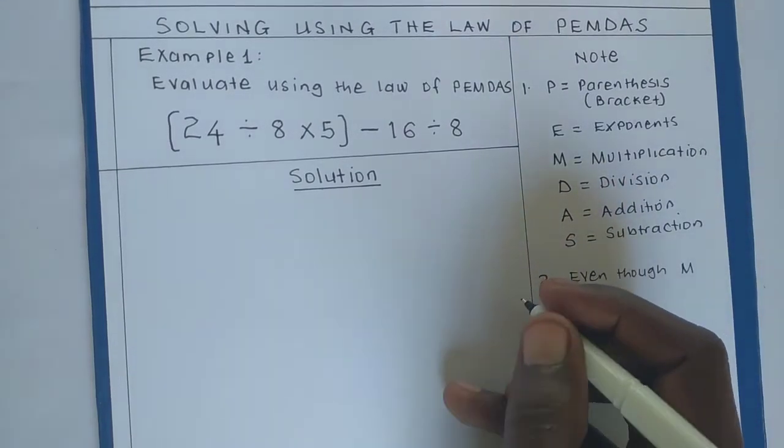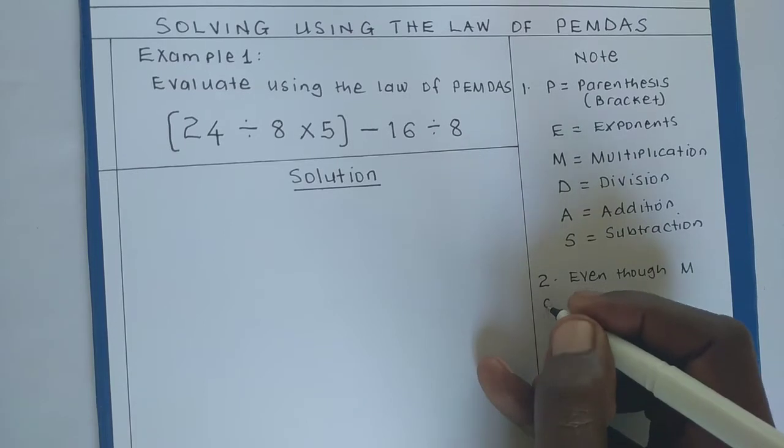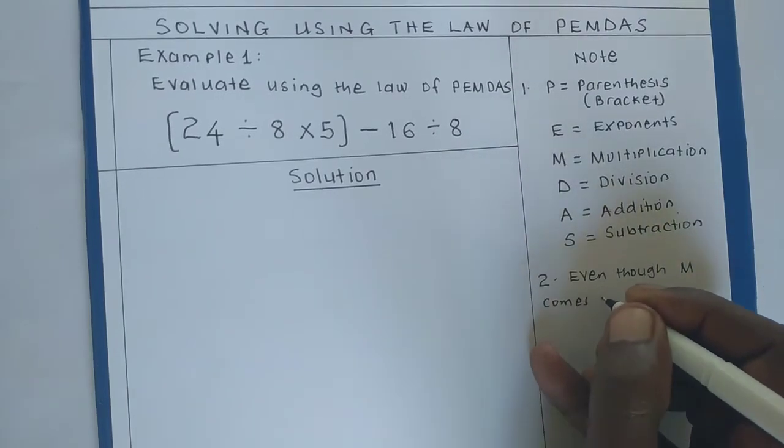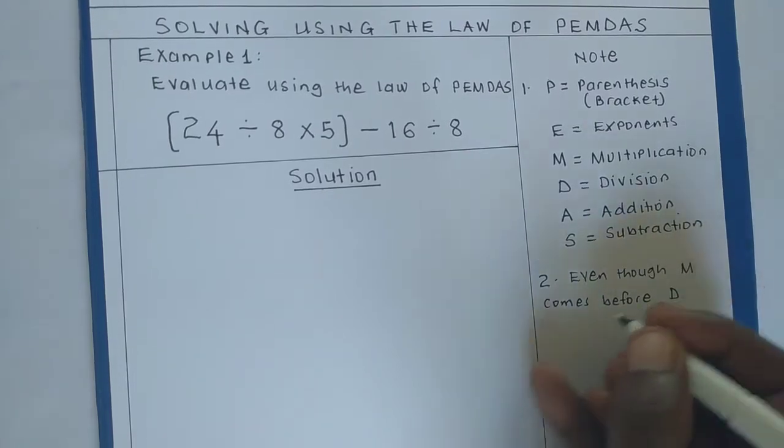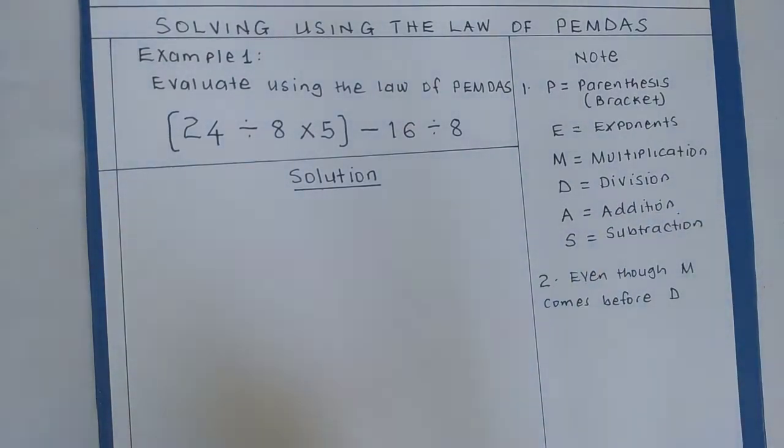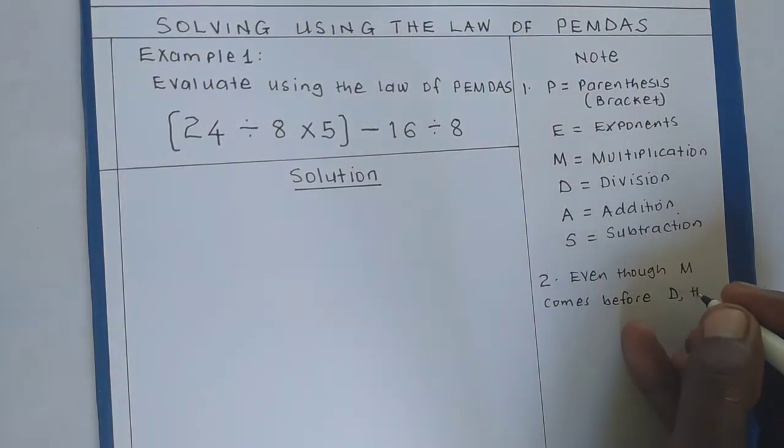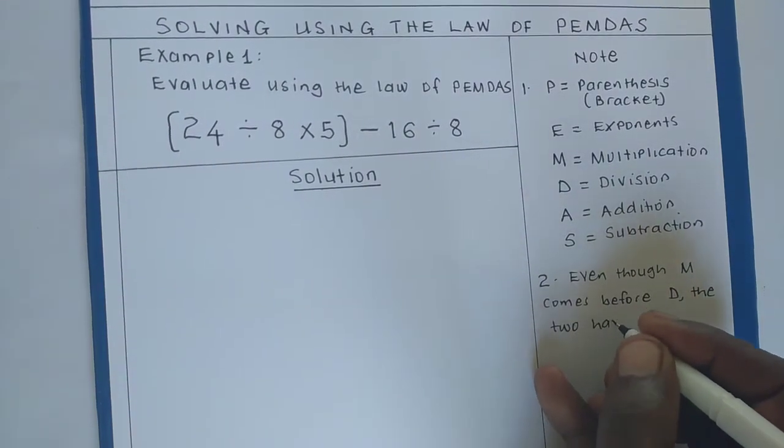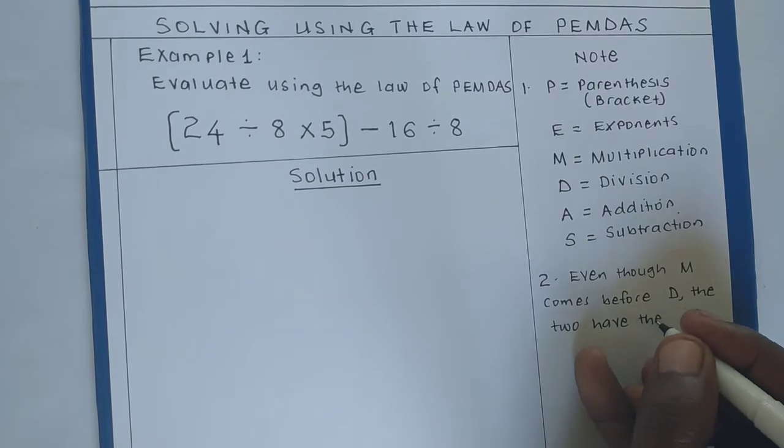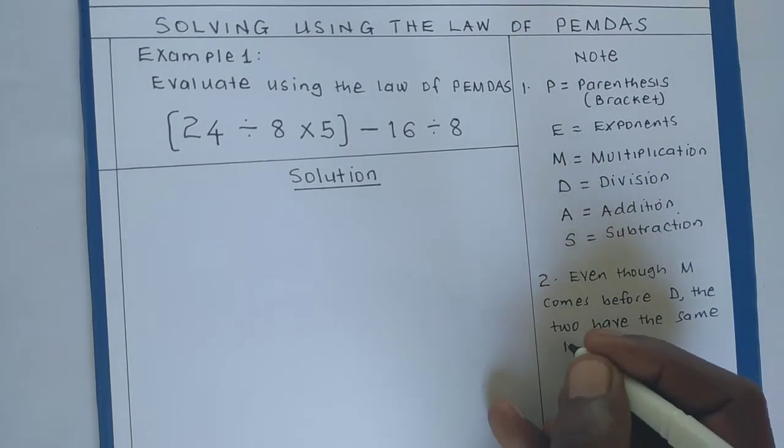M for multiplication comes before D for division, the two have the same priority.